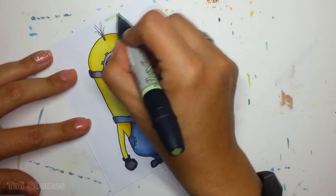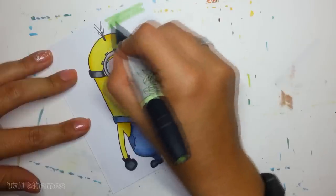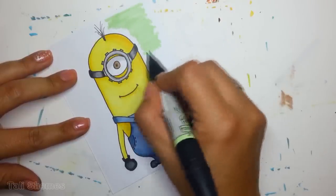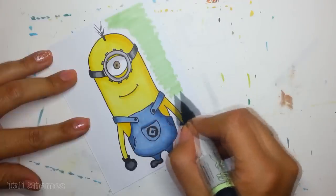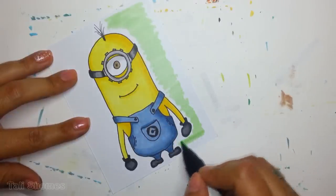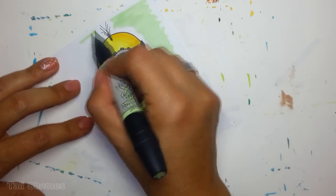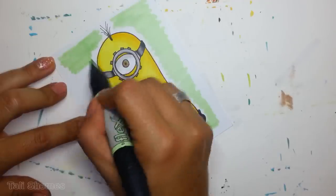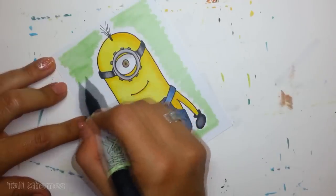Finally for the background I'm using a flex marker. The name of the color is meadow green. I use flex markers for backgrounds because I bought some flex markers and I don't like them that much, so if I need to draw backgrounds or big surfaces, I like to use my flex markers.